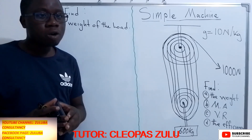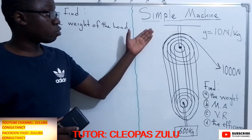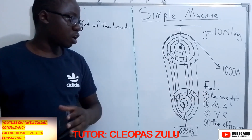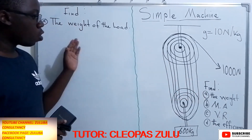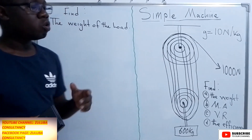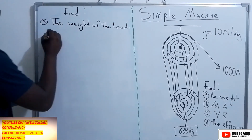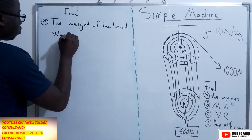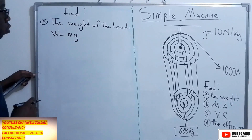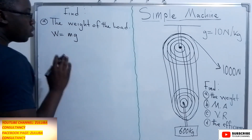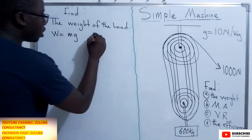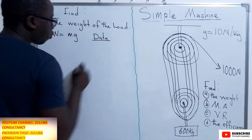Hello and welcome back to Zuluwa Consultants. In this video, I want to answer this question under the topic simple machines. The first question is asking us to find the weight of this load. For us to find the weight of the load, we need to remember that weight is equal to mg, where g is the acceleration due to gravity. In the question, we have been given that the acceleration due to gravity is 10 newton per kg.